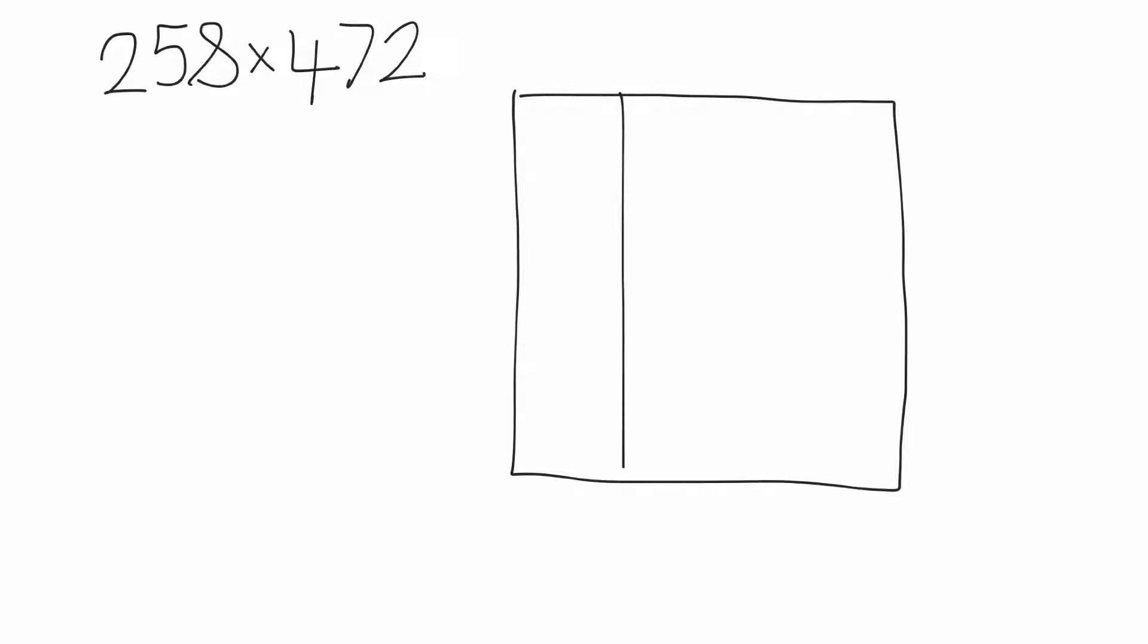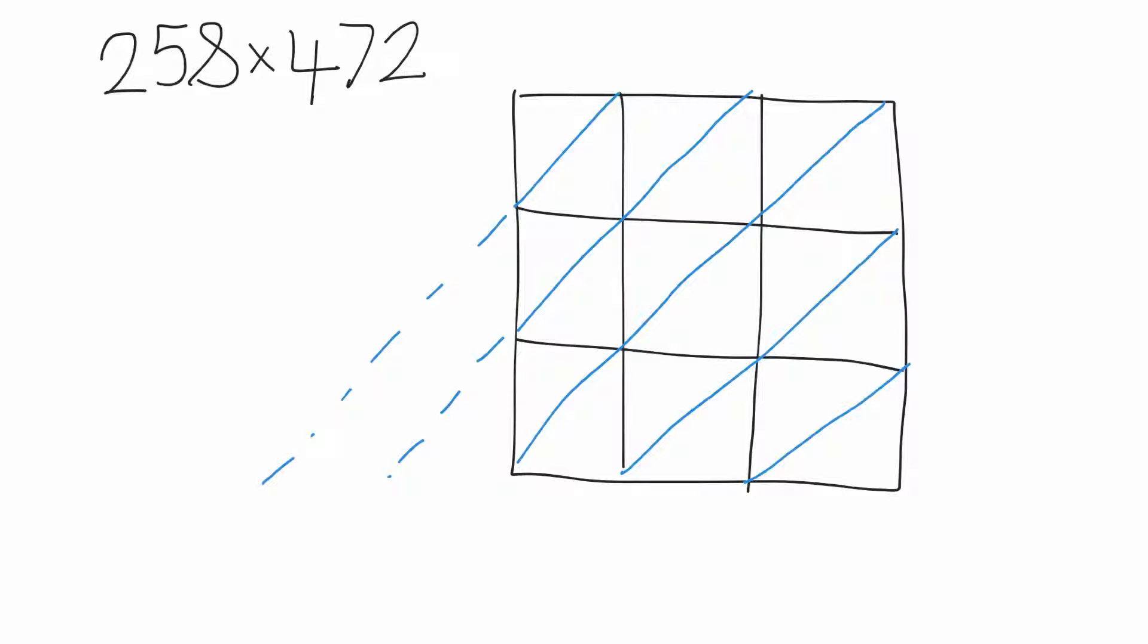Spend a bit of time setting your grid out, it will really help. Same with the grid method, the more careful you are, the more accurate you're going to be. So bring them down, okay, so we'll write the numbers. Then we've got 2, 5, 8.